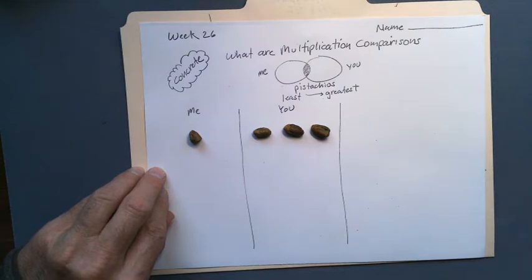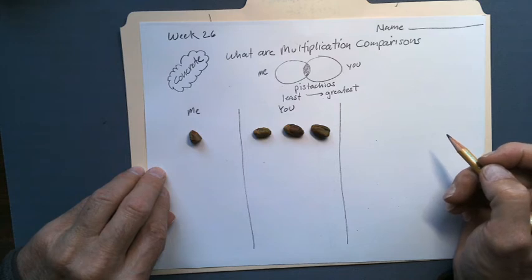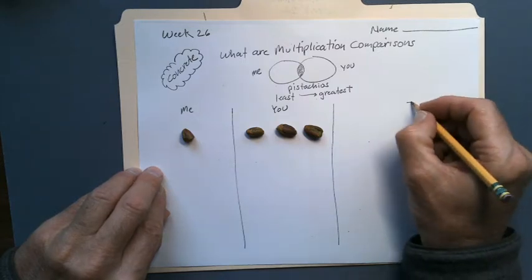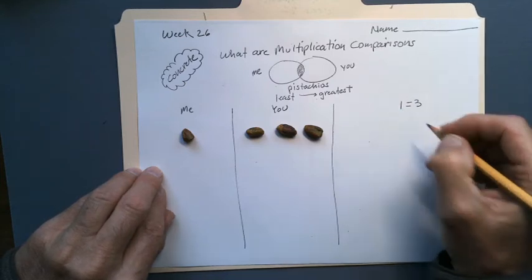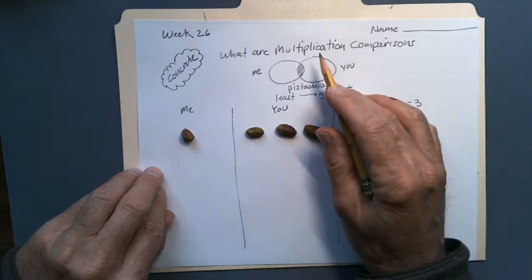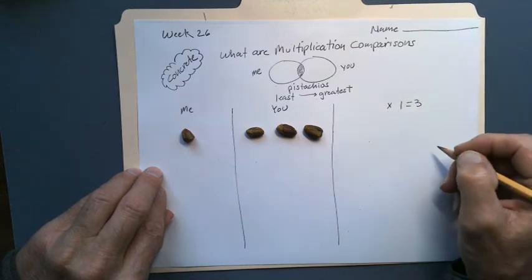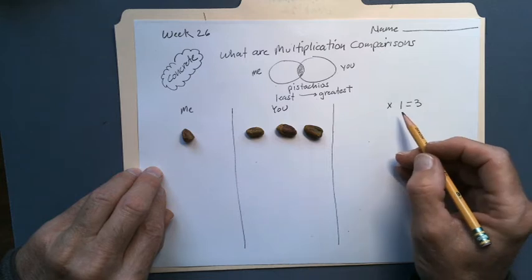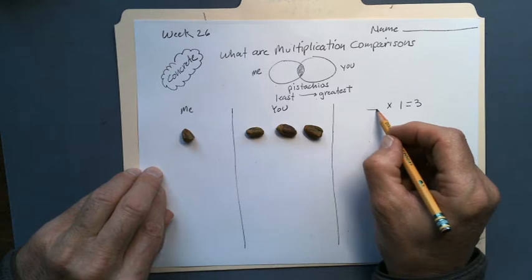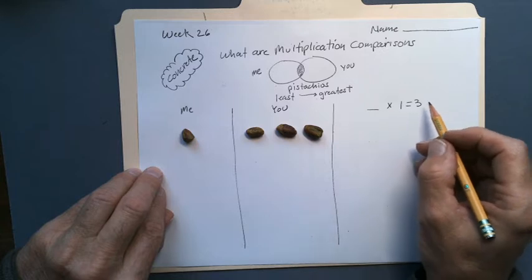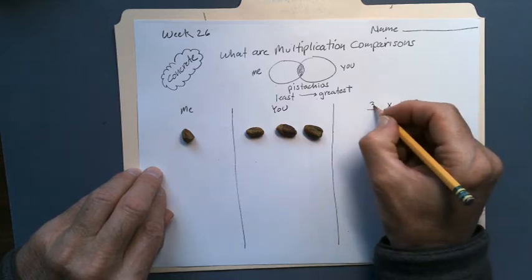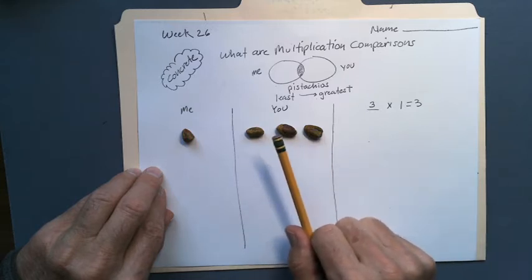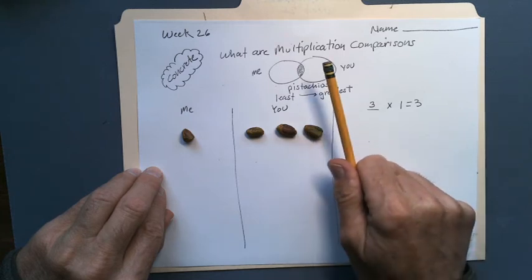So what would this actually look like? If you need more time, always stop the video and catch up. You have three and I have one. We're using the operation multiplication, not addition. How many times more pistachios do you have than me? You have three, I have one. What number would make this equation true? If you said three, you're correct. Sure enough, you have three times as many pistachios as I do — one times, two times, three times. That's what we're talking about when we use multiplication comparisons.